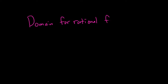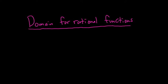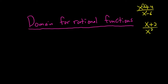A rational function is a function that's a fraction — basically a polynomial over a polynomial. Things like x squared plus 4 over x minus 6, or x plus 2 over x squared minus 8. Those are rational functions. You have powers of x with whole number exponents, and you're dividing them.